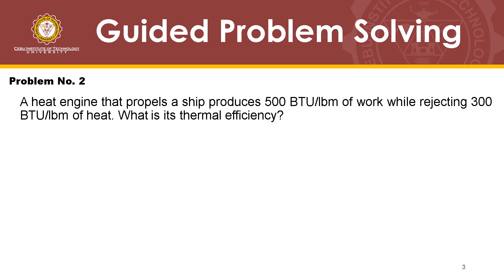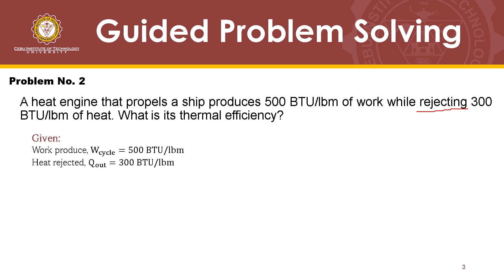Let's proceed to problem number 2. A heat engine that propels a ship produces 500 BTU per pound mass of work, while rejecting 300 BTU per pound mass of heat. What is its thermal efficiency? We are given the work produced, which is 500 BTU per pound mass, and the heat rejected, or heat going out of the heat engine, which is 300 BTU per pound mass. The unknown quantity is the thermal efficiency.